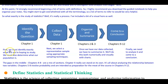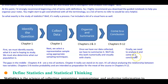In chapter 1, we must first identify exactly what it is we're hoping to study and determine what our population is. Next, we select a representative sample using appropriate sampling techniques. When we get to chapters 2 and 3, once we have our data collected, we summarize it both numerically and visually with charts. And then finally, in chapters 9 through 12, we analyze it and come to a conclusion.